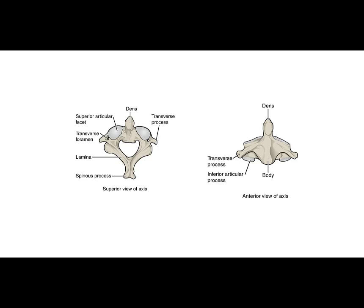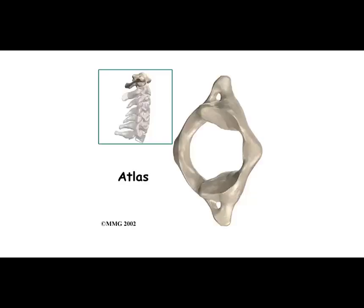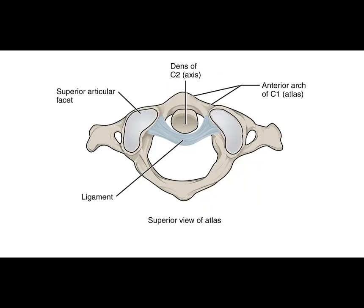The two upper cervical vertebrae are rather unique. C2, known as the axis, has a dens or odontoid process that projects superiorly. The atlas, also known as C1, has no vertebral body. The dens from C2 projects superiorly into C1, the atlas, and is held in place by the annular ligament.